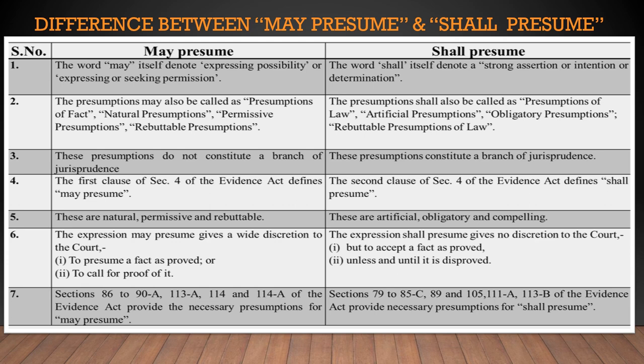The expression may presume gives a wide discretion to the court — that means to presume a fact as proved or to call for proof of it — whereas the expression shall presume gives no discretion to the court but to accept a fact as proved unless and until it is disproved. Sections 86 to 90A, 113A, 114, and 114A of the Evidence Act provide the necessary presumptions for may presume.